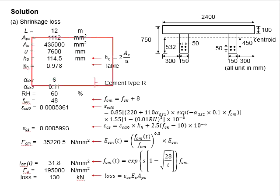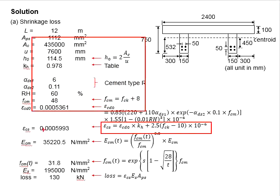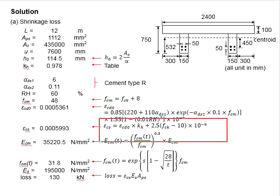Now substitute all the relevant values into the equation here. You get epsilon_cs. The losses due to the shrinkage is determined by the equation here, where the modulus of elasticity of the steel is 195 GPa, and total area of the steel tendon will be a total N, which is 8 units, times the area of the tendon for the steel strand. It is calculated to be equal to 130 kN.